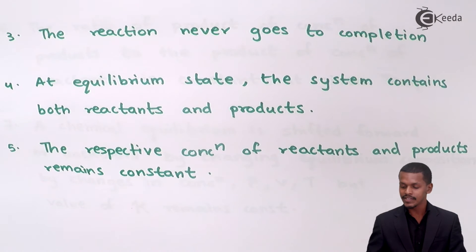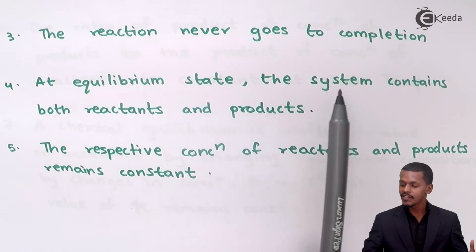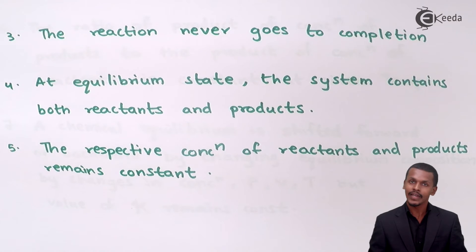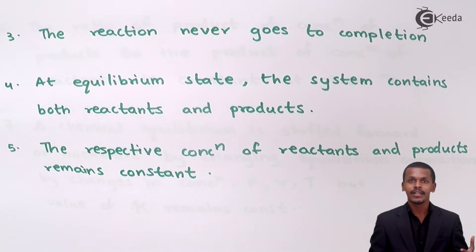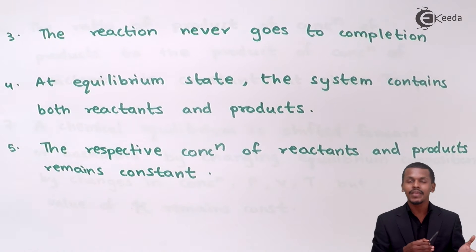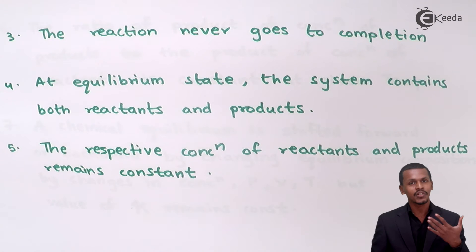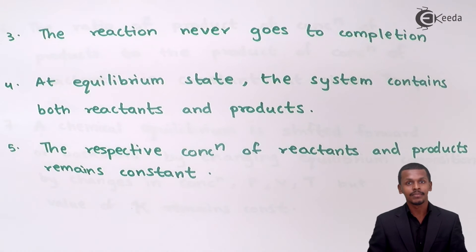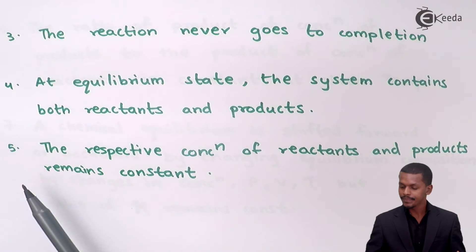At equilibrium the system contains both the reactants and the products. Both reactants and products are present simultaneously, and this is known as the equilibrium mixture or equilibrium state.